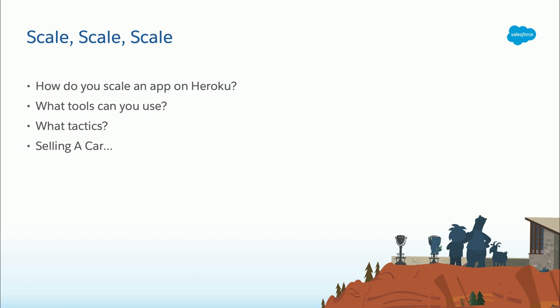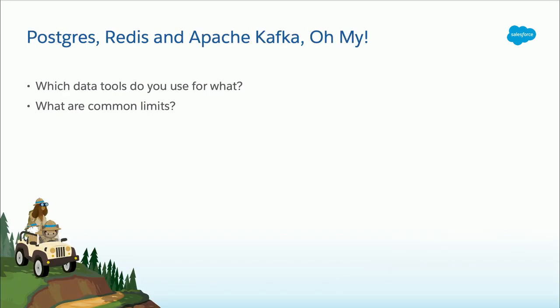Approaching scale on Heroku means pretesting, opening a ticket with support, and making sure you know what you're getting into. The exam will also ask which data tools you use for which problems. Heroku has three primary data tools: Heroku Postgres, Heroku Redis, and Heroku Kafka. We'll ask about common limits around those tools and when to use them. We won't ask about third-party tools like MySQL on Heroku — only Heroku-provided services.